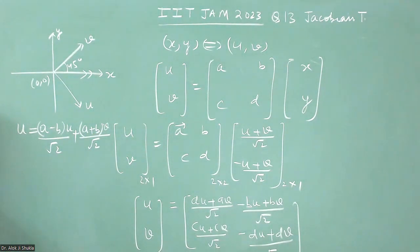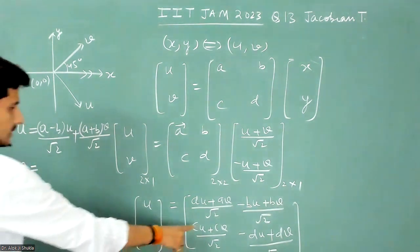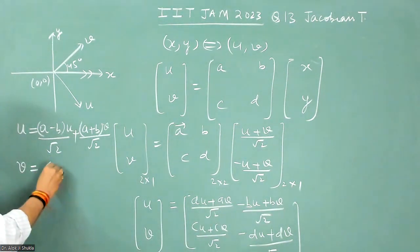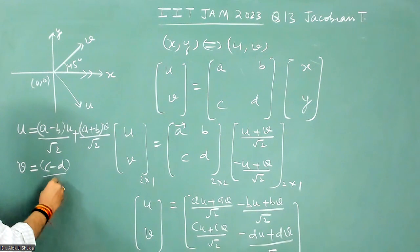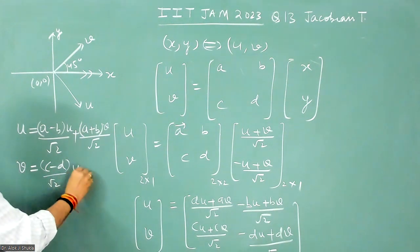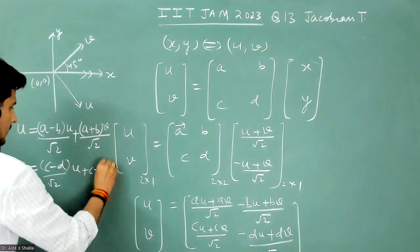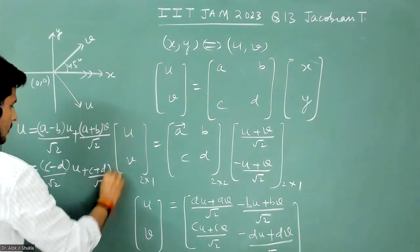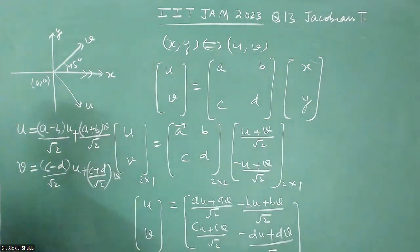And what you get as V is: V is equal to C minus D by root two times U, plus C plus D by root two times V.